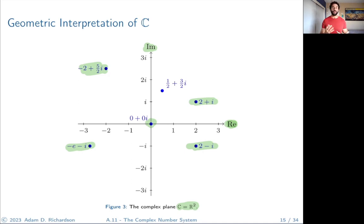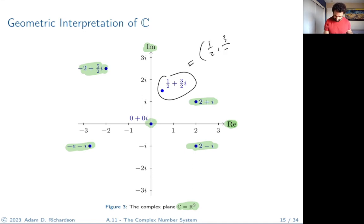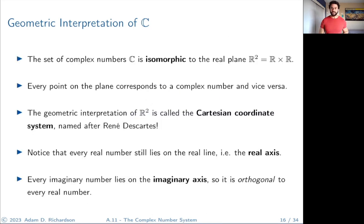The complex plane C is basically the same thing as the real plane, the xy plane. The point (1/2, 3/2) is the same as the complex number 1/2 + 3/2 i. There's an isomorphism between these planes. The set of complex numbers is isomorphic to R × R, so every point on the xy plane corresponds to a complex number.